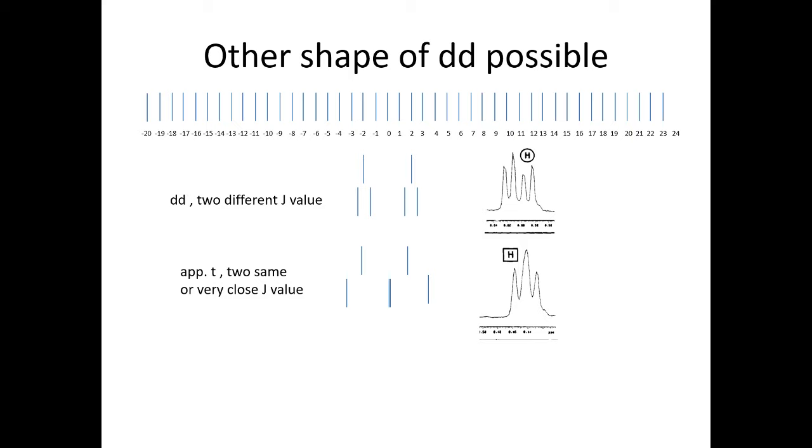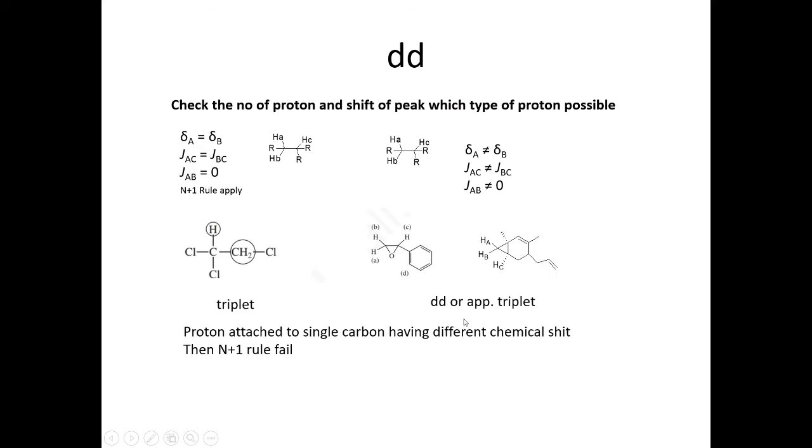Here is another possible shape of doublet of doublet. One proton is coupled to another with the largest J value of 4, and then another proton is coupled to that proton having J value of 2. It should be a nice doublet of doublet.